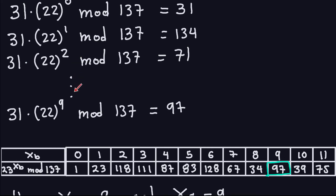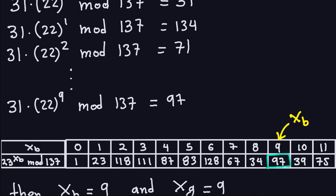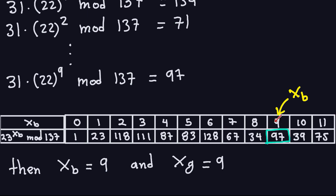The first time we get a match is when xg = 9: the result is 97, which appears in the second row of the table. The number above it in the first row gives us xb = 9. Note that xb and xg both happen to equal 9 here — that's a coincidence; they don't have to be the same number.